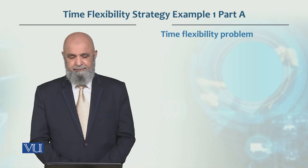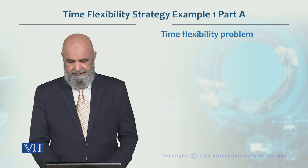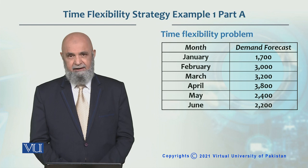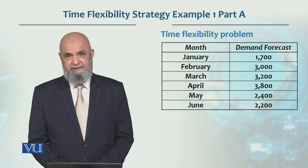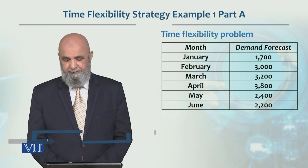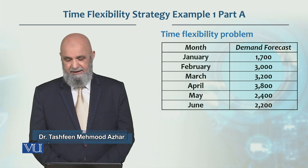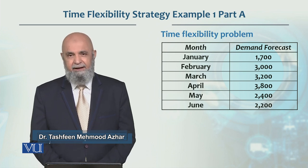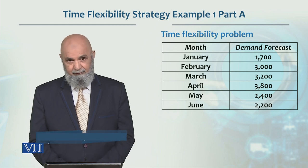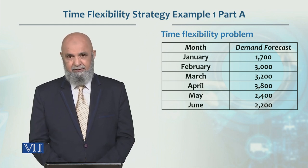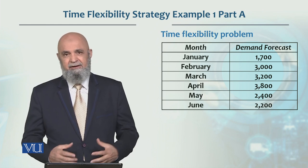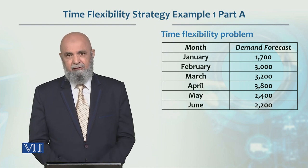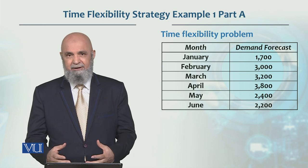Let's look at an example of time flexibility strategy. Suppose we have six months of demand: January is 1,700 units, February 3,000, March 3,200, April 3,800, May 2,400, and June goes down to 2,200. This is our demand, and we have time flexibility to use this demand to meet this demand.